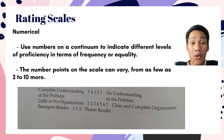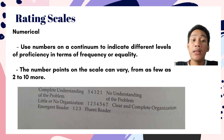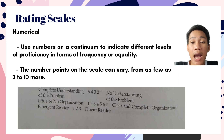Another example: little or no organization is the lowest point at 1, and the highest point is 7, which is clear and complete organization. However, if you're going to use the scale to indicate only low, medium, or high, then 3 points will be sufficient. For example, emergent reader is the lowest point at 1, and the highest point is 3, which is fluent reader.